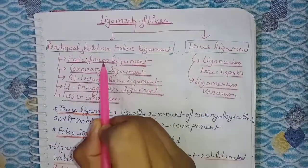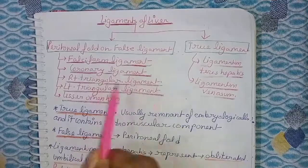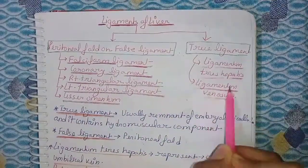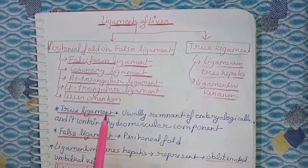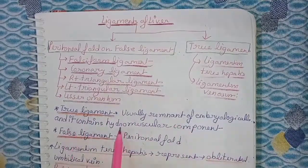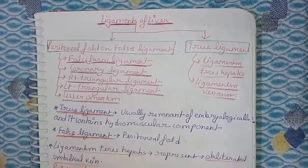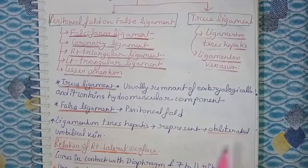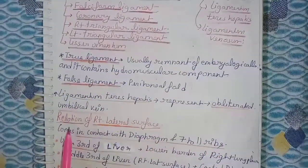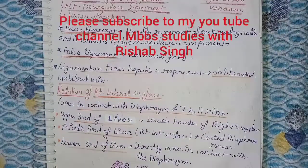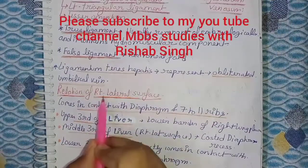Ligaments of the liver — peritoneal folds, false ligaments, and true ligaments. False ligaments are: falciform ligament, coronary ligament, right triangular ligament, left triangular ligament, and lesser omentum. True ligaments are: ligamentum teres hepatis and ligamentum venosum. True ligaments are usually remnants of embryological structures and contain fibromuscular components. False ligaments are peritoneal folds. Ligamentum teres hepatis represents the obliterated umbilical vein.